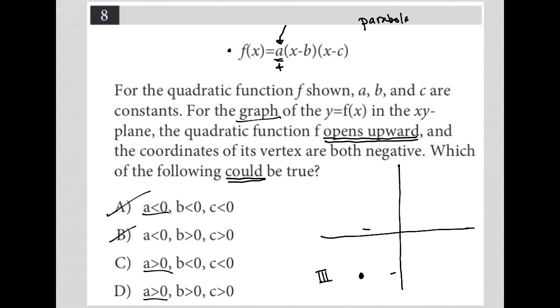So with C, it's saying not only is A positive, but also B is negative and C is negative. Well, where would B and C show up on my graph? So if you recall from your parabola equation, these become the x-intercepts or these are the x-intercepts.